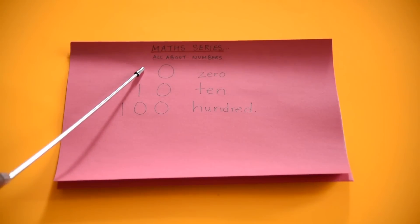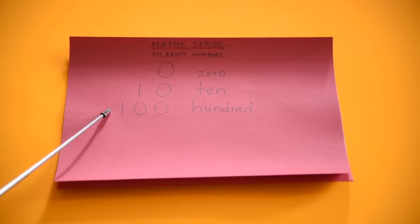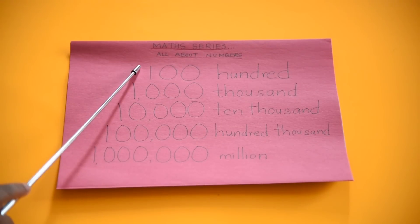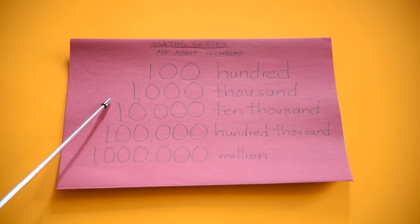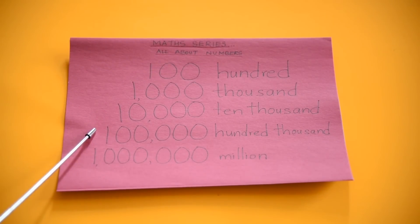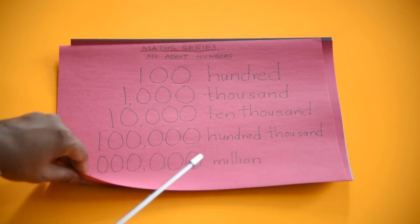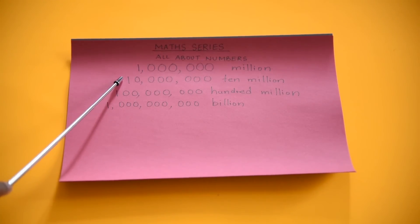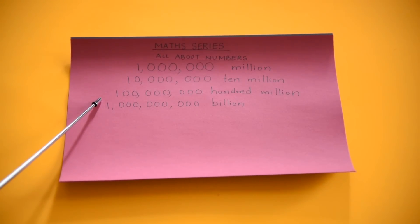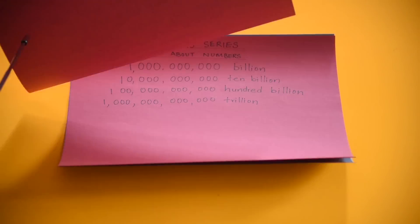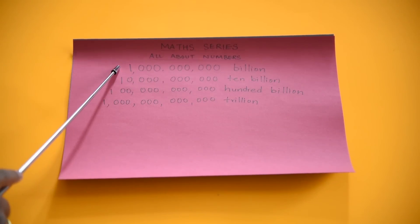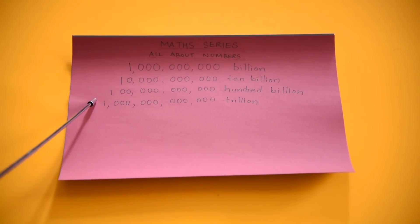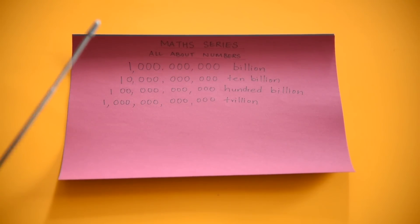What's this Ishaan? Zero, ten, hundred, thousand, ten thousand, hundred thousand, million, ten million, hundred million, billion, ten billion, hundred billion. Great job!